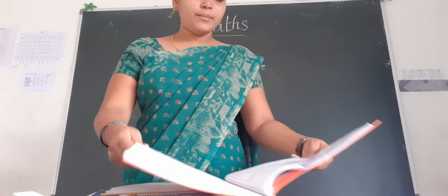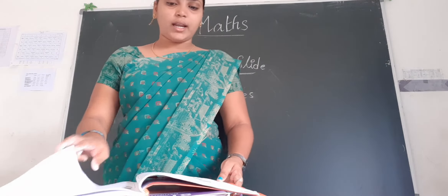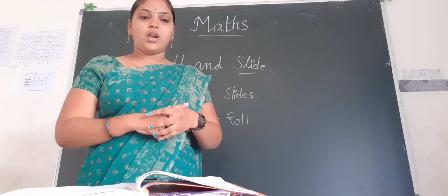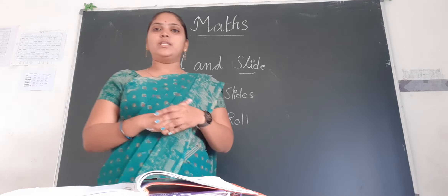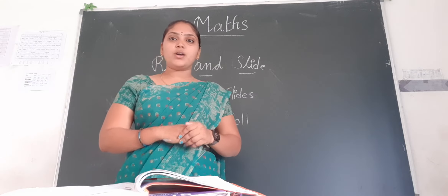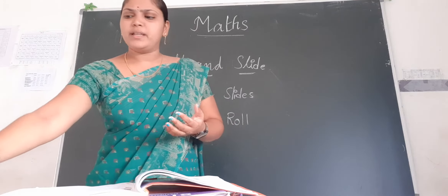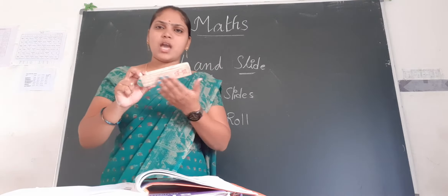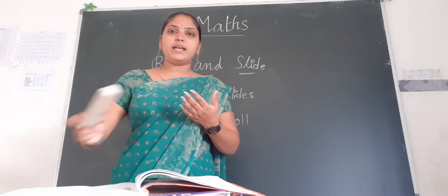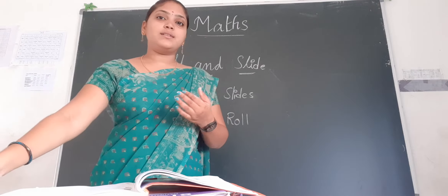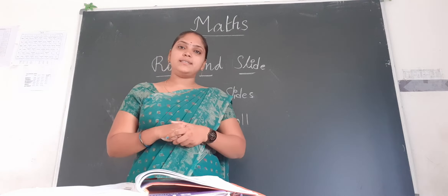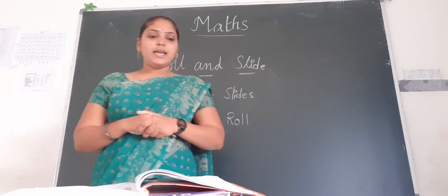Now in page number 28 children, we have some objects. Ball — we know that ball rolls. And pencil box — pencil box also has a flat surface. So does it slide or roll? It slides.